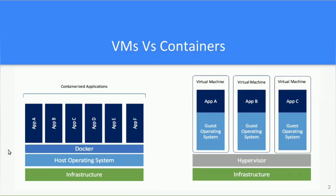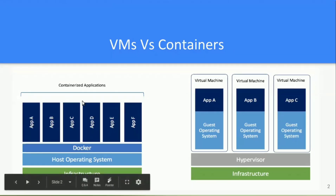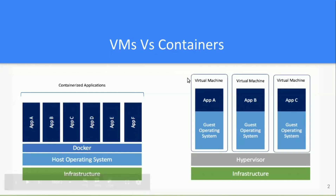On the other hand, in case of docker containers, instead of virtualizing hardware, only the operating system is virtualized. A docker container sits on top of the host operating system and shares the host operating system kernel along with required binaries and libraries. From the picture, it is clear that all containerized applications sit on top of the host operating system.